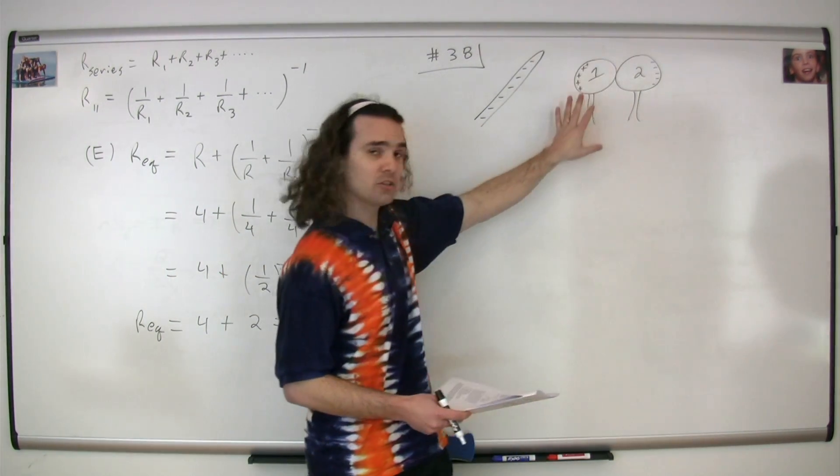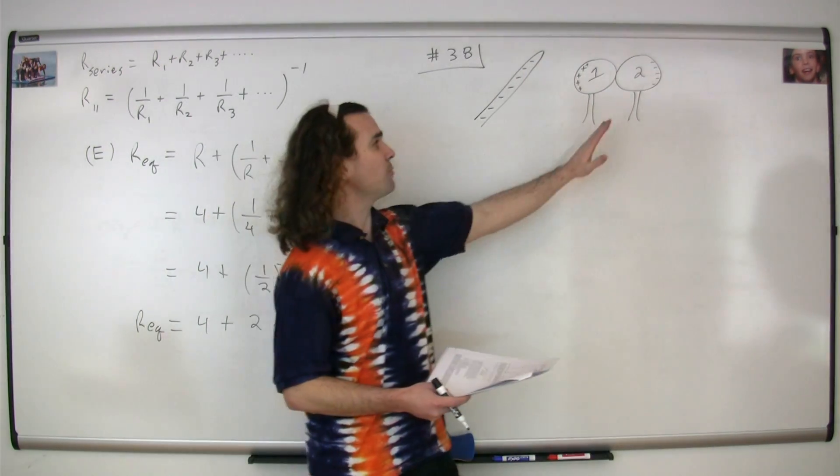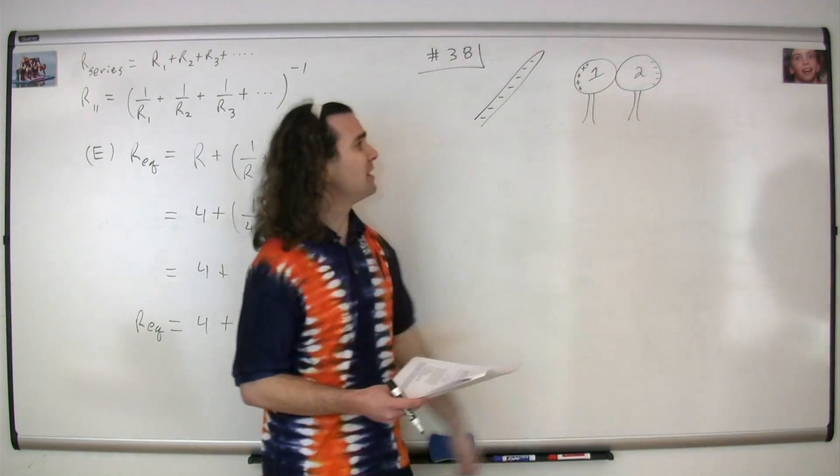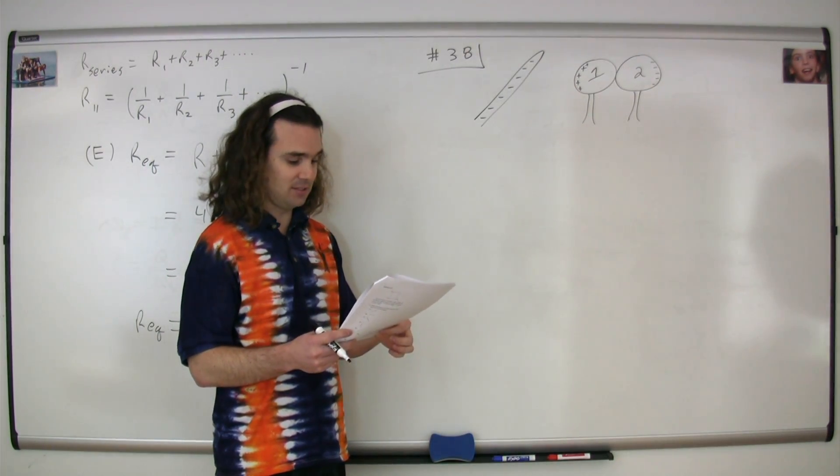Notice that the net charge on one and two is going to stay the same, it's just that we're rearranging them. And when we move two away from one, the net charge on two is going to be negative, therefore the correct answer is C, conductor two is negatively charged.